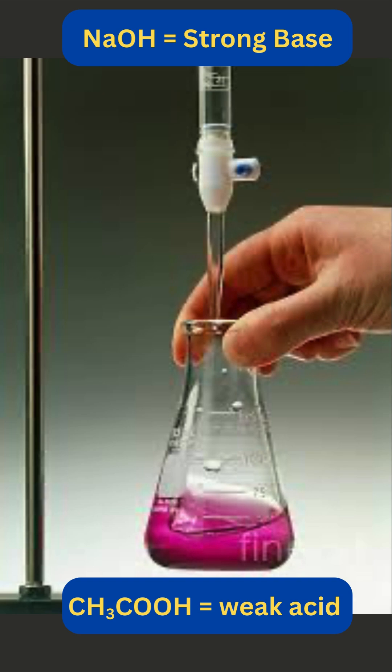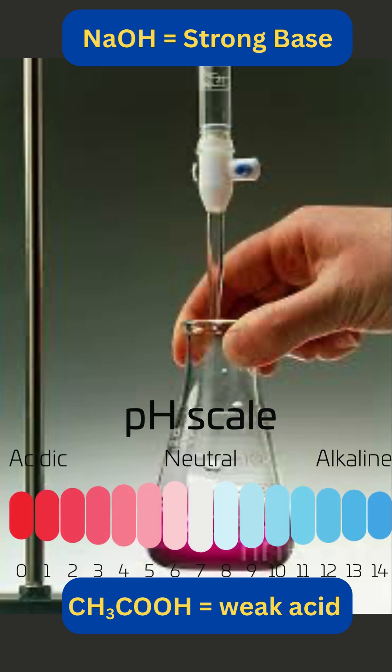This is a titration between a weak acid and a strong base. Sodium hydroxide is in the burette, acetic acid is in the titration flask, and we measure the pH of the solution in the flask as the drops fall from the burette. All right, let's go step by step.